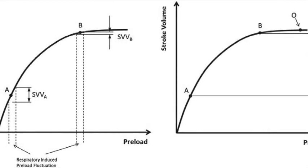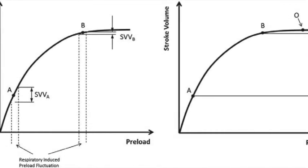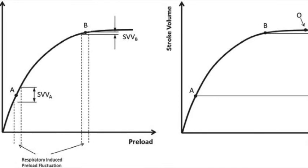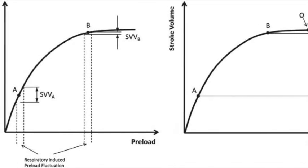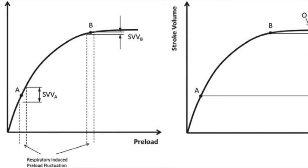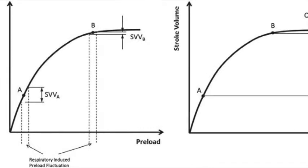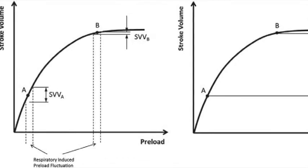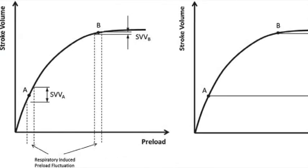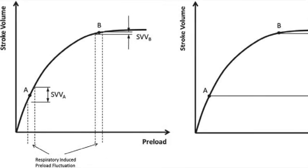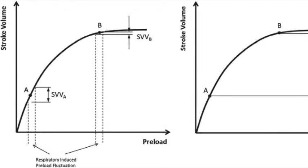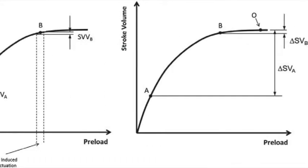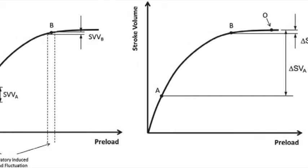On the other hand, if the heart is on the flat part of the Starling curve, and there is no change in blood pressure with the change in preload during ventilation, then you are directly seeing that increasing preload does not affect blood pressure. Through changes in intrathoracic pressure, you can interrogate the Starling curve in real time. This is most easily demonstrated with an arterial waveform, but the photoplethysmogram captured by the pulse oximeter can be used as well.